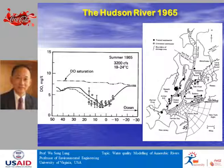The dash-dot curve is dissolved oxygen saturation, which progressively decreases in the downstream direction. That's because temperature is higher in the lower estuary, and dissolved oxygen saturation — the solubility of dissolved oxygen in water — is temperature dependent. Higher temperature means less dissolved oxygen dissolves in water. The bottom line is that dissolved oxygen was very low in the Hudson 50 years ago.